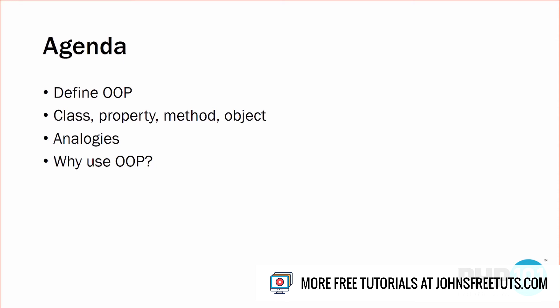We're going to define object-oriented programming. We're going to talk about some of the reserved keywords — class, property, method — and then also talk about the difference between classes and objects. I'm going to give you some analogies, hopefully a little bit more informative than the ones I dealt with when I was learning this stuff. And then we'll talk about why you would want to use object-oriented programming and why it's become such a big thing and generally recommended in most situations.